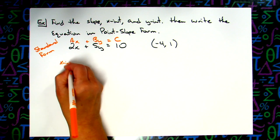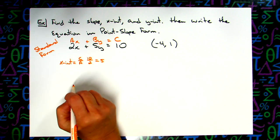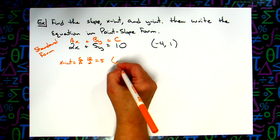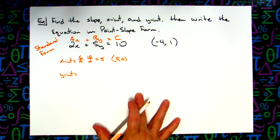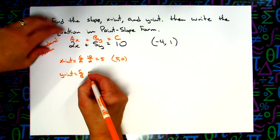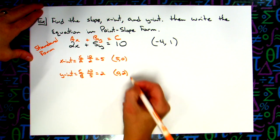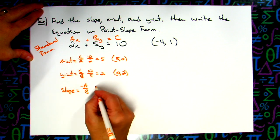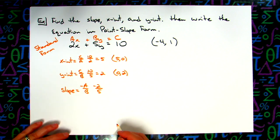For the x-intercept, use c over a: 10 over 2 is 5, so the x-intercept as an ordered pair is (5, 0). For the y-intercept, use c over b: 10 over 5 is 2, so that's (0, 2). For the slope, use negative a over b: negative 2 over 5, which doesn't reduce — so the slope is negative two-fifths.